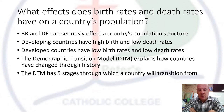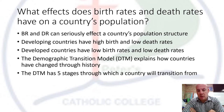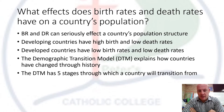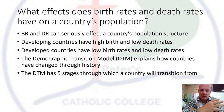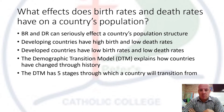Fertility rates are the number of babies born per thousand women in a country. Mortality rate is the number of deaths per thousand per year in a certain country. Fertility rates affect birth rates, mortality rates affect death rates, and there's a transition of how countries go through those stages, which is heavily reliant on development.